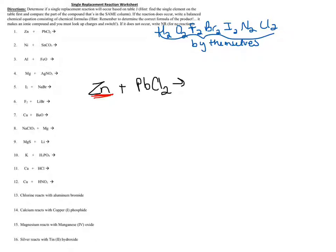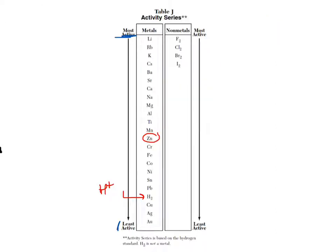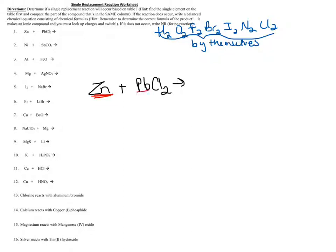Now I go back to my problem and compare my single element to the part of the compound that's on the same side of the table. Here I have Pb and Cl. Pb is on the same side of the table, so I can compare the activity of the two metals. Cl is on the other side — I never want to compare two things in different columns — so I'm comparing Zn to Pb. In order for there to be a single replacement reaction, the element that's by itself has to be higher or more active than the one in the compound.